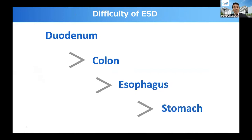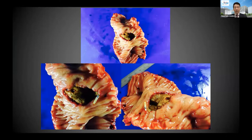This slide shows the difficulty level of ESD. Currently, the most difficult ESD is duodenal, followed by colon, esophagus, and stomach. Duodenal ESD is the most difficult because intra-procedural perforation occurs more frequently than other gastrointestinal ESD.